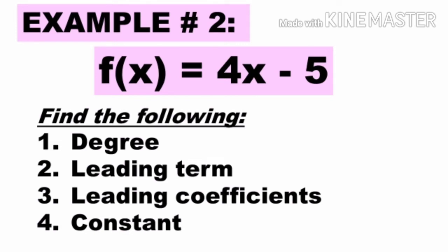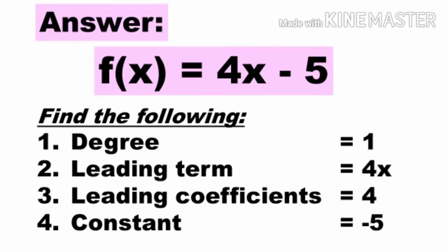Number 2: f(x) = 4x - 5. Remember, kapag walang nakikitang exponent ang variable, ang exponent nun ay 1. So the degree of the given function 4x - 5 is 1. The leading term is 4x. The leading coefficient is 4. And the constant is negative 5.